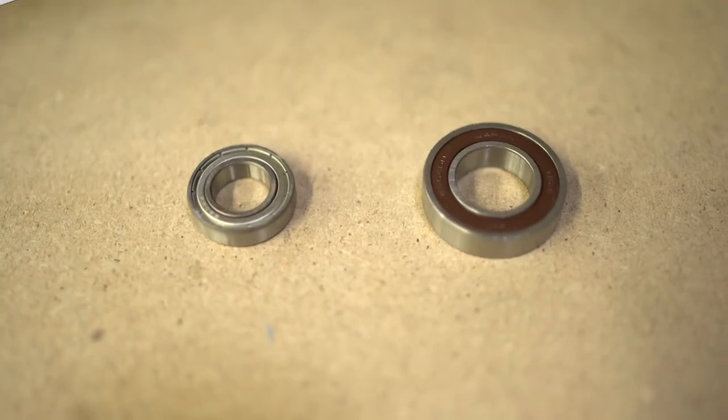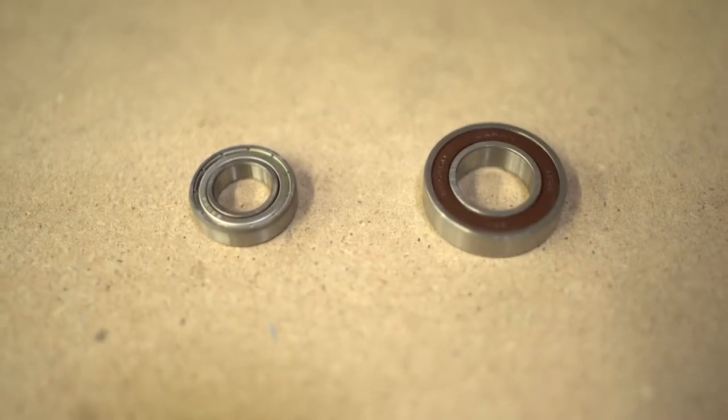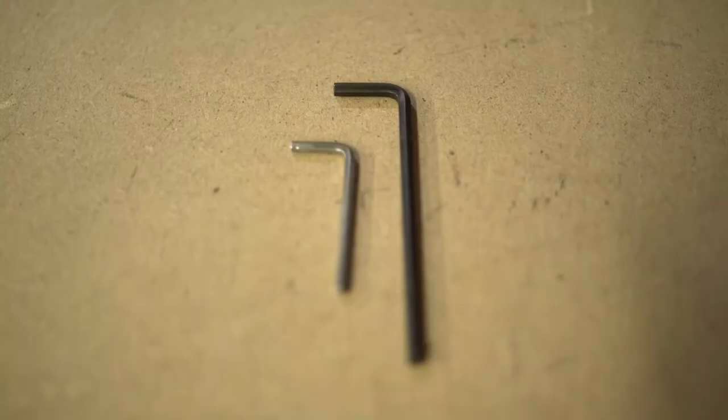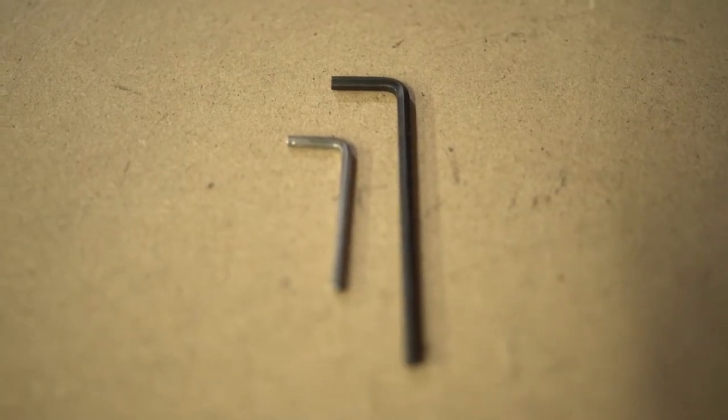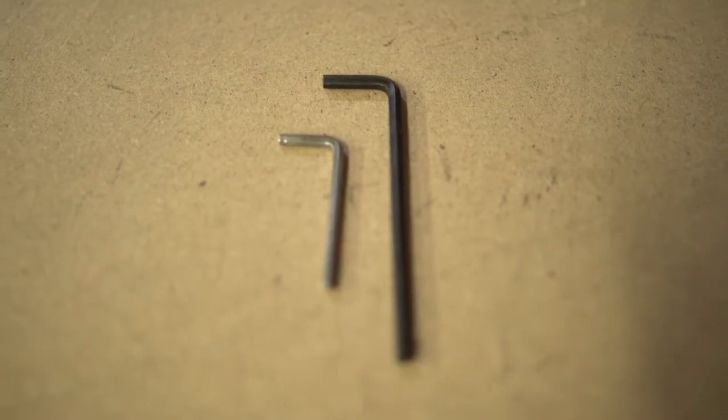You'll need replacement augur bearings, either the top, the bottom, or both, depending on which bearings need replacing. You'll also need a set of Allen wrenches. You will need both a 4mm and a 5mm to loosen and remove the augur system.